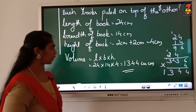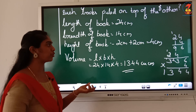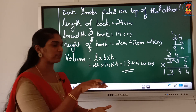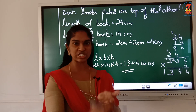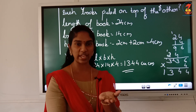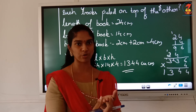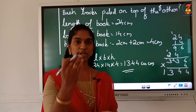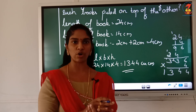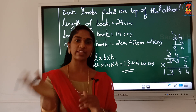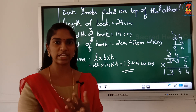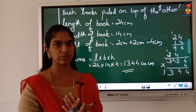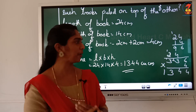So you can do it in both ways: when you keep these two books together the height changes to 4, or you can find the volume of one book and then multiply by 2. Any way you want, you can do this question.